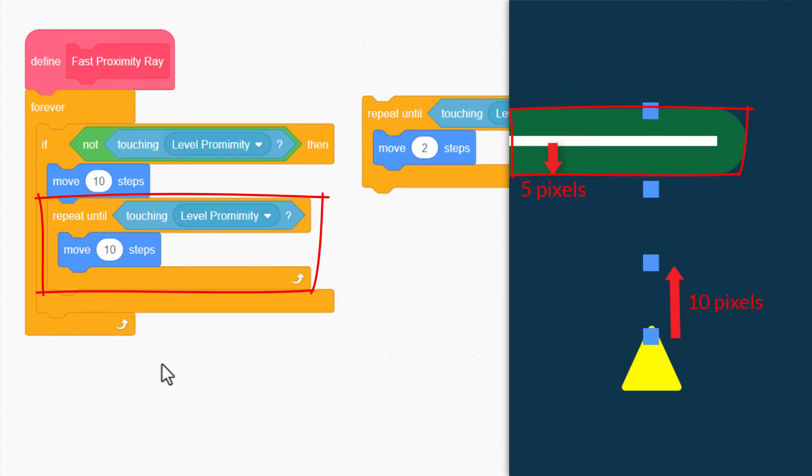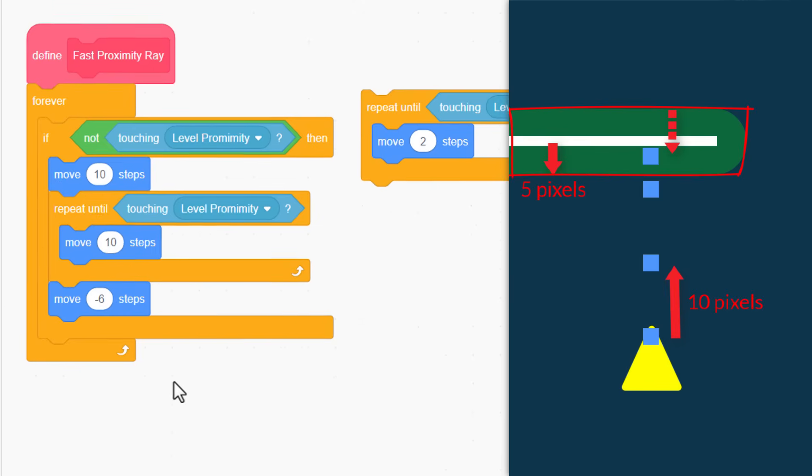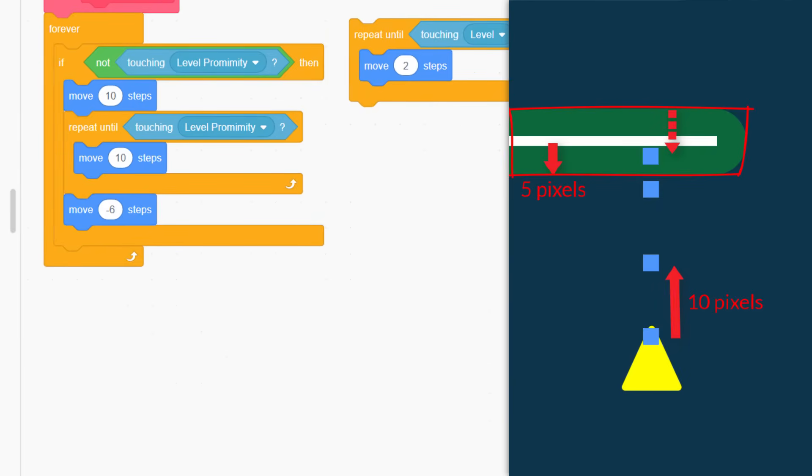Now, finally, this repeat will end when we have hit the proximity sprite. So, what do we do? We need to back off a little. I'm opting for a move of negative 6 steps. This is just in case we have overshot. And now we do the detailed scan of the real level.